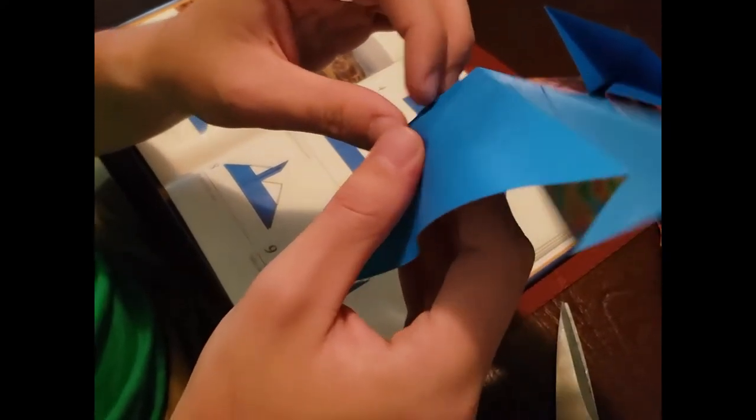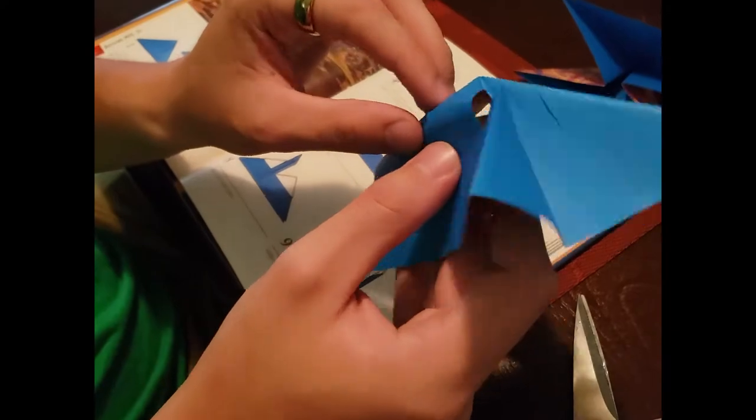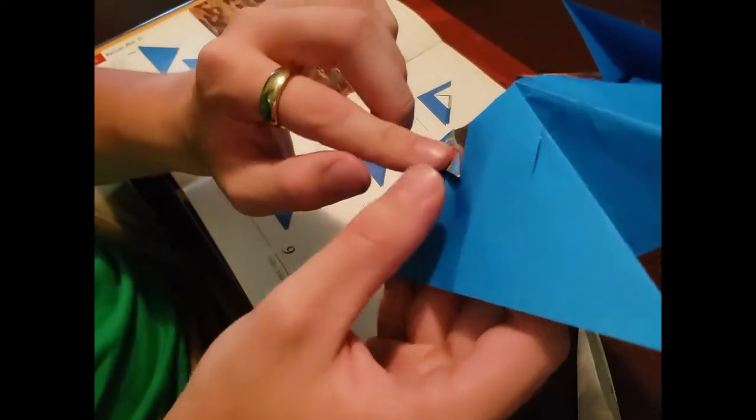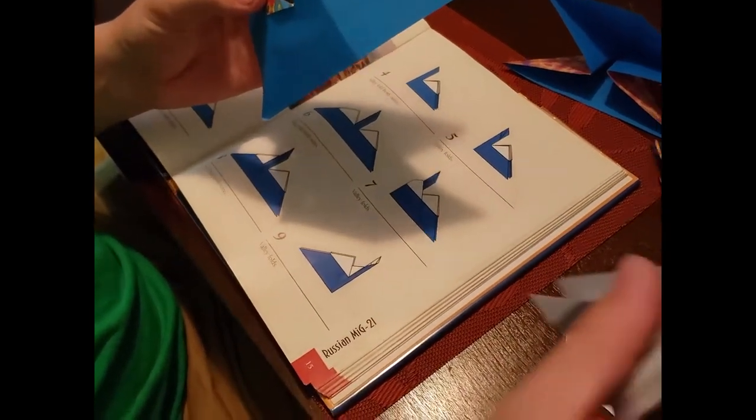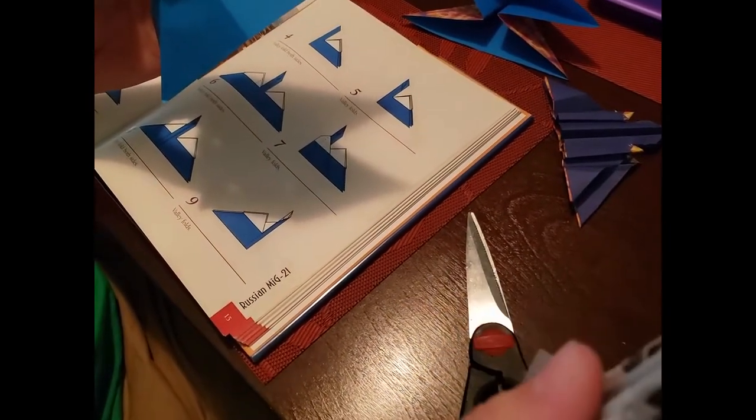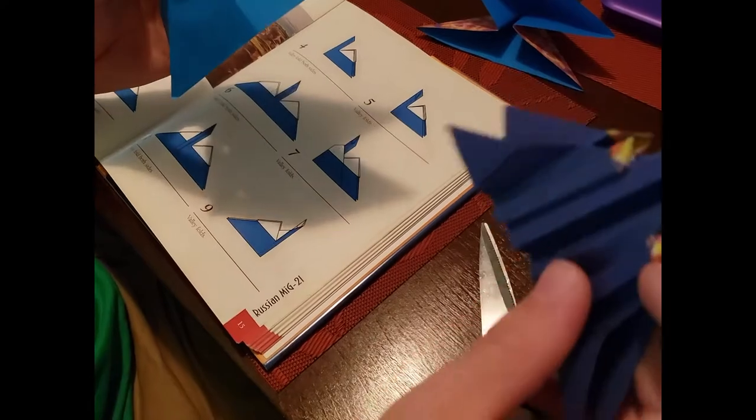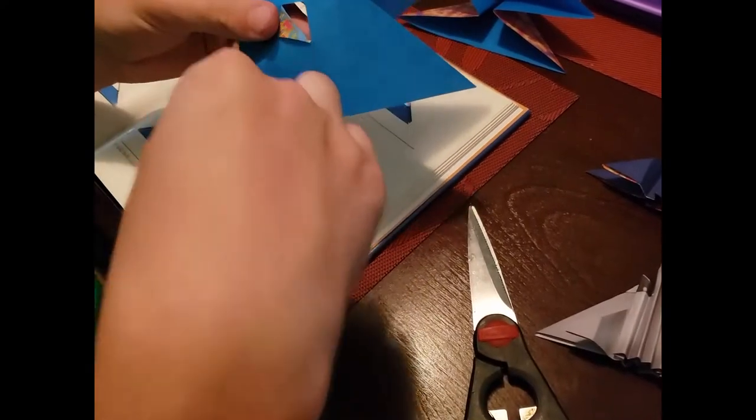And you do this for all four sides. And another big part of this fold is the further down you cut on your paper is how big these tips are going to be. As you can see these ones are longer than these ones because I cut further down into the paper.